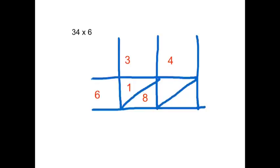First thing we do is to calculate 6 times 3, which would give us 18. One 10, which goes above the line, and 8 units, which goes below the diagonal line.